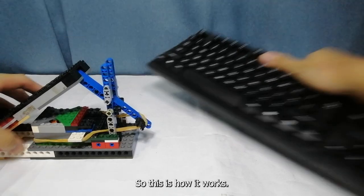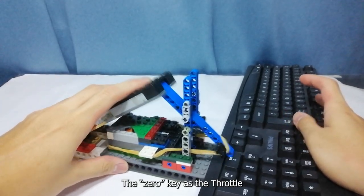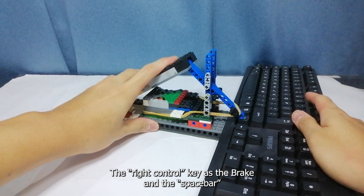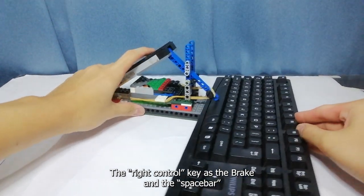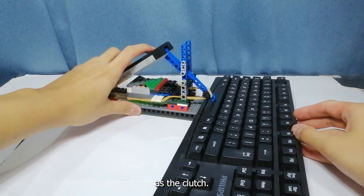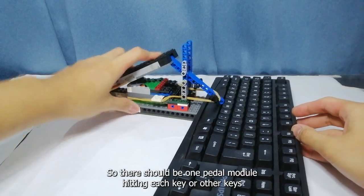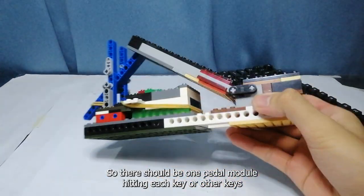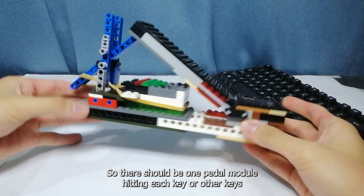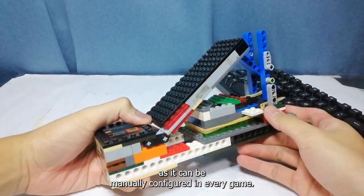So, this is how it works. The zero key as the throttle, the right control key as the brake, and the spacebar as the clutch. There should be one pedal module hitting each key, as it can be manually configured in every game.